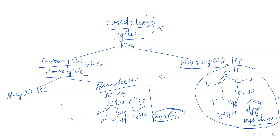Are you getting all of this? Yes, fine. So that was about aromatic hydrocarbons — they are also known as arenes and their general formula is CnH2n-6.